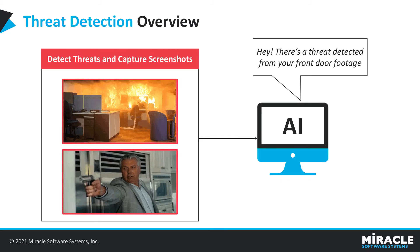This is the basic detection overview. You can see two images with two different kinds of threats — fire detection as well as weapon detection. As these threats are detected, the system will capture a screenshot of the video at that time and then send it to the concerned officials.